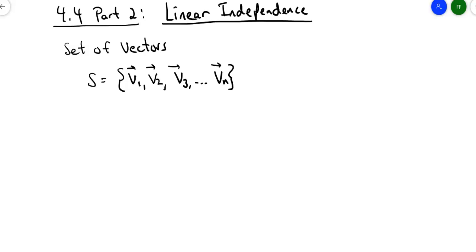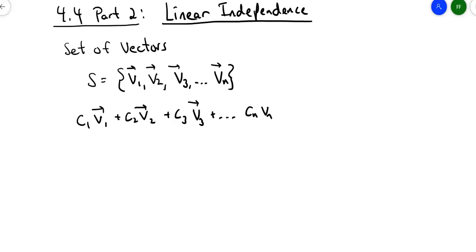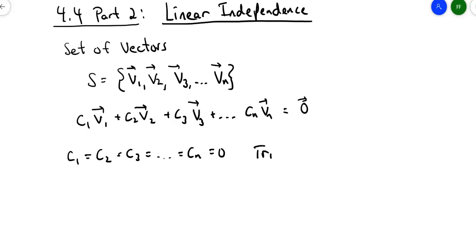Remember that from this set of vectors, you can always write a linear combination and set it equal to zero. So you can have C₁V₁ plus C₂V₂ plus C₃V₃, and so forth until you get to CₙVₙ, and that equals the zero vector — a whole string of zeros. There always has to be a solution to this, which is that every possible coefficient is equal to zero. We call that the trivial solution.